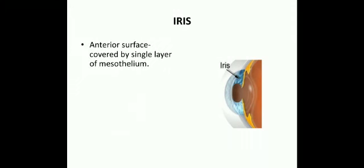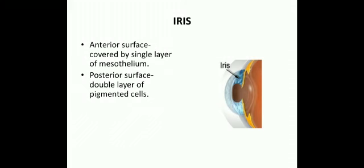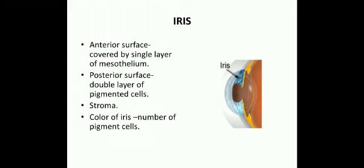The anterior surface of the iris is covered by a single layer of mesothelium, and the posterior surface is a double layer of pigment cells. The main bulk of the iris is made up of stroma consisting of connective tissue and pigment cells. The color of the iris is determined by the number of pigment cells; if there are no pigment cells the iris appears blue.